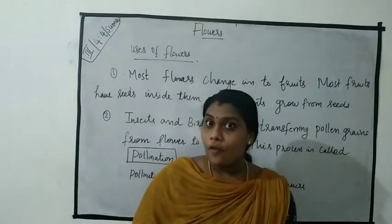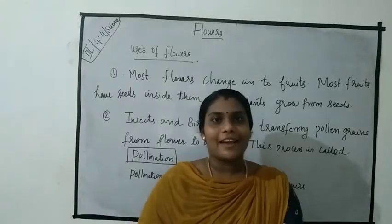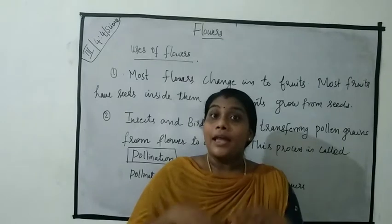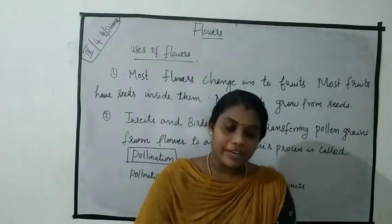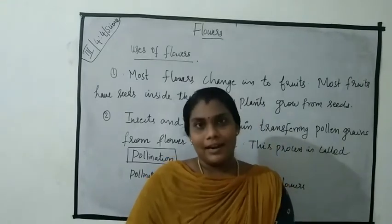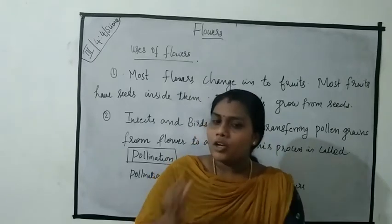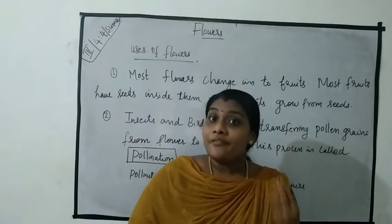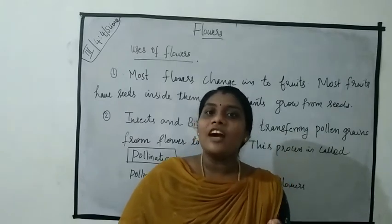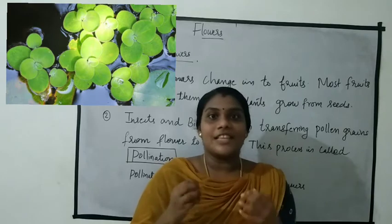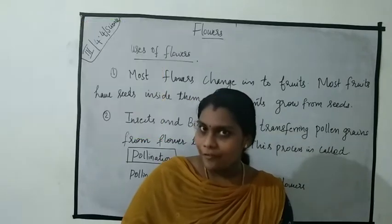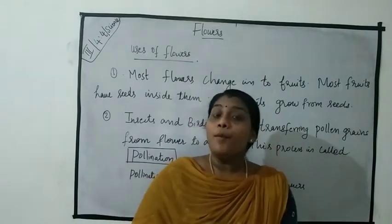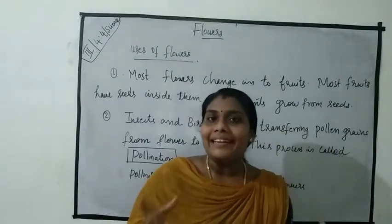We already know flowers are the most attractive parts of the plant. These flowers have different sizes, shapes, and colors. Some flowers are small and some flowers are big. Flowers such as buckwheat are small, and flowers such as water lily, rafflesia, and lotus are big. Most flowers are brightly colored.